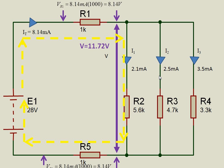So if I take a closed loop and look at the voltages in that closed loop, I can see that the voltages are 8.14, 11.72, and 8.14. So that's the voltage drops across the network. And if I add them together, I get 28 volts.